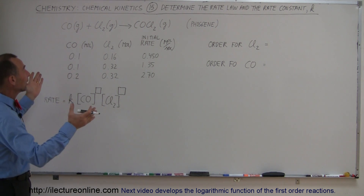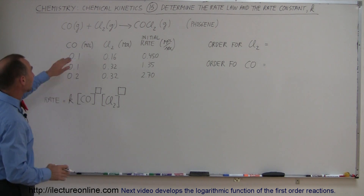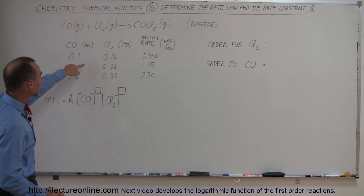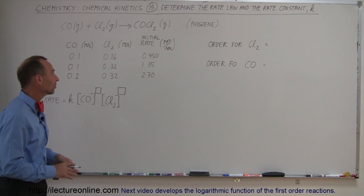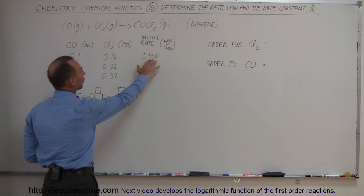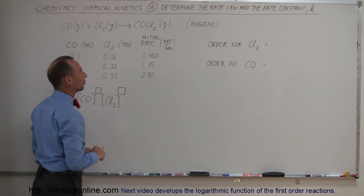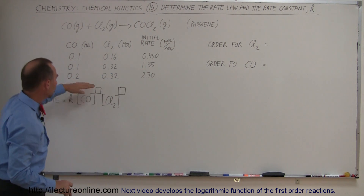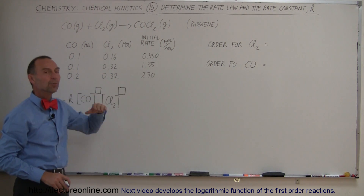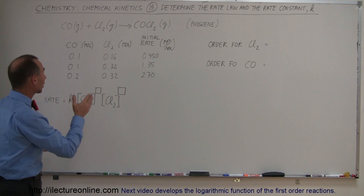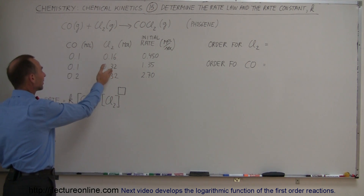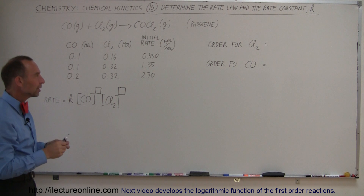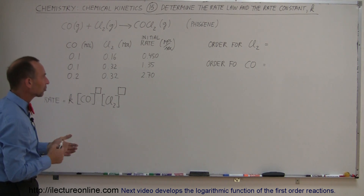Here's an example of what happened when we mixed the two gases at various concentrations: 0.1 for carbon monoxide, 0.16 for chlorine gas, and the initial rate is 0.45 moles per second. If we then change the concentrations, we get a different reaction rate. We're changing the concentration of each reactant separately so that we can see the effect on the overall reaction rate.